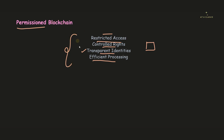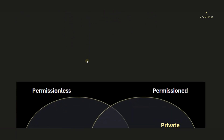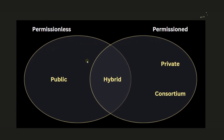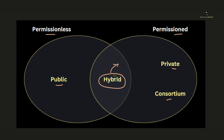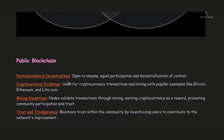As we have seen, inside permissionless blockchain there is public blockchain; inside permissioned blockchain there are private and consortium blockchains; and the combination of permissionless and permissioned blockchain forms hybrid blockchain. Now we are going to look into all these types one by one, starting with public blockchain.